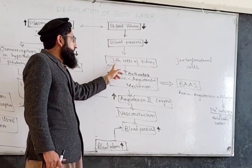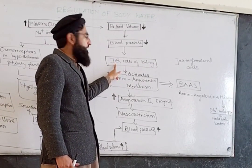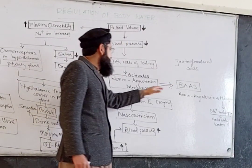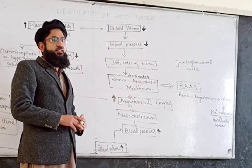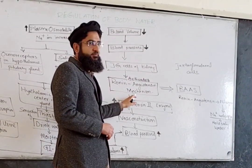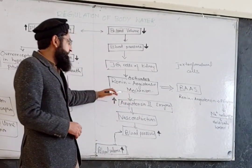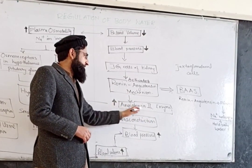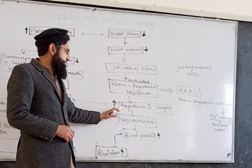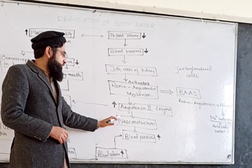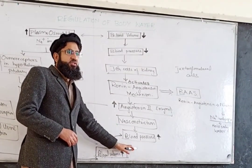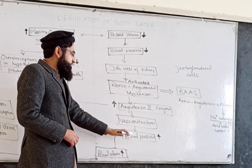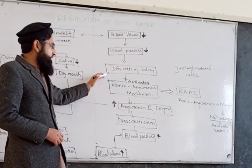When blood pressure is decreased, the cells inside the kidney — which are juxtaglomerular cells — will activate the renin-angiotensin mechanism. This renin-angiotensin mechanism acts on angiotensin 2. Renin activates angiotensin 2, which causes vasoconstriction. This vasoconstriction increases blood pressure. So if blood pressure decreases due to blood volume decrease, blood pressure will be maintained by the renin-angiotensin mechanism.